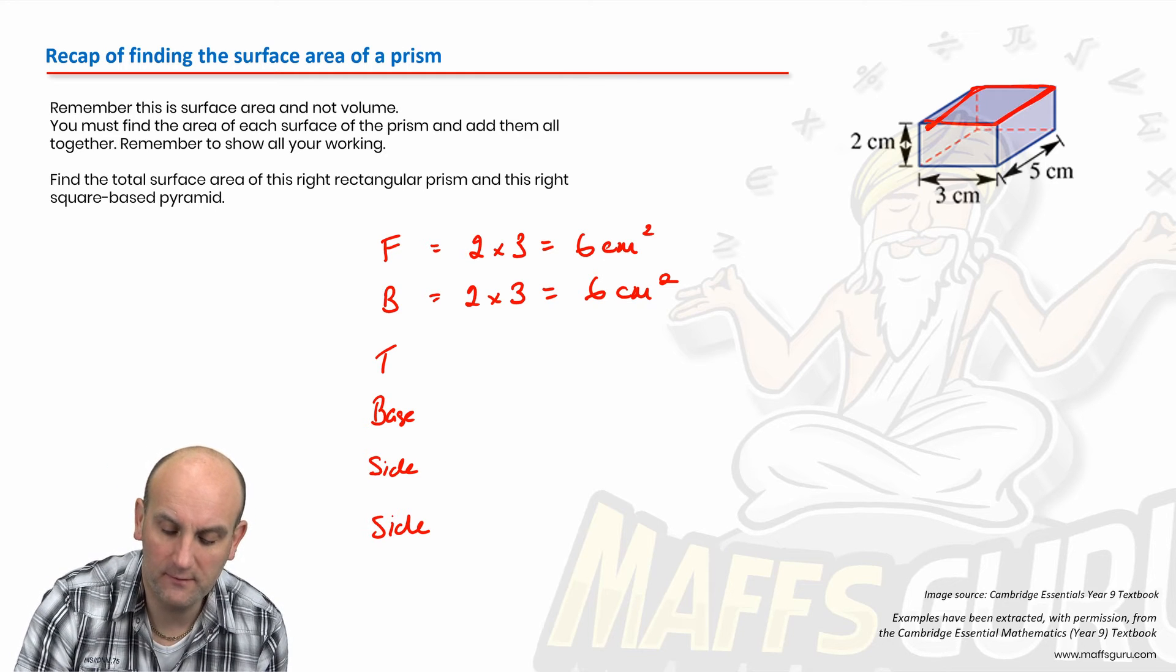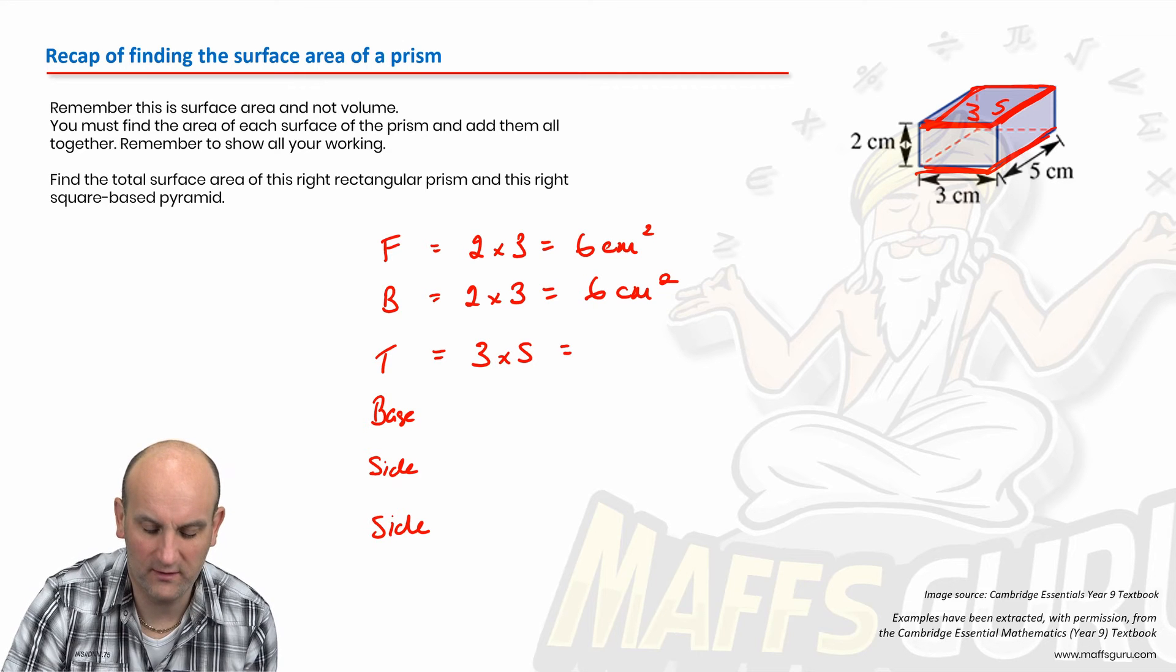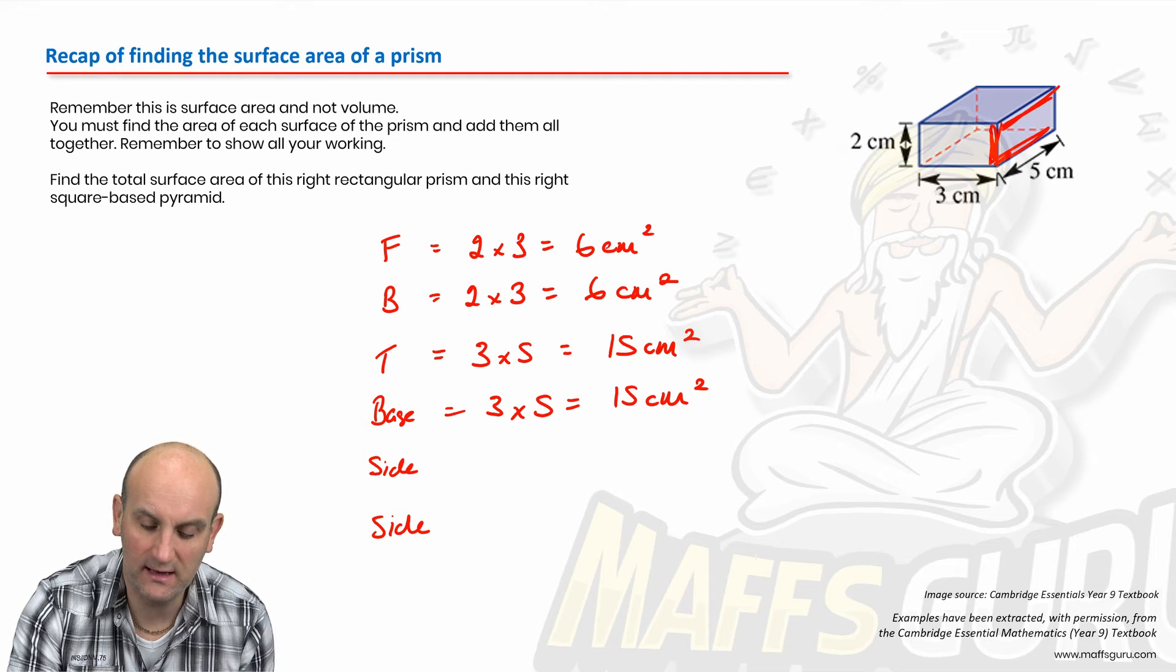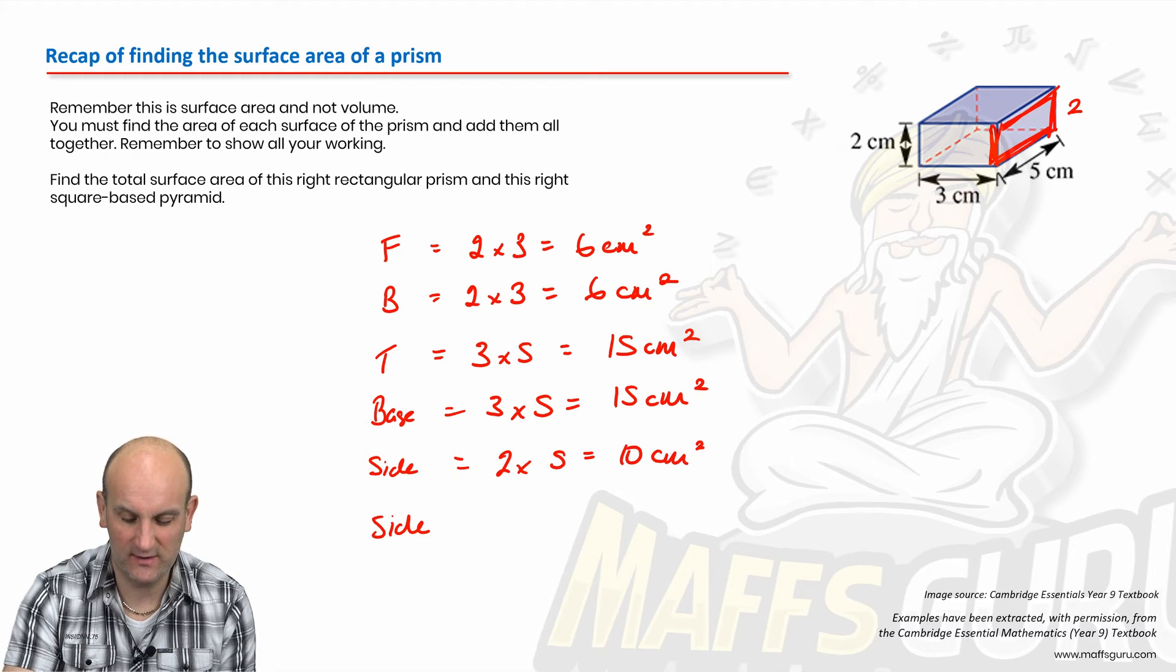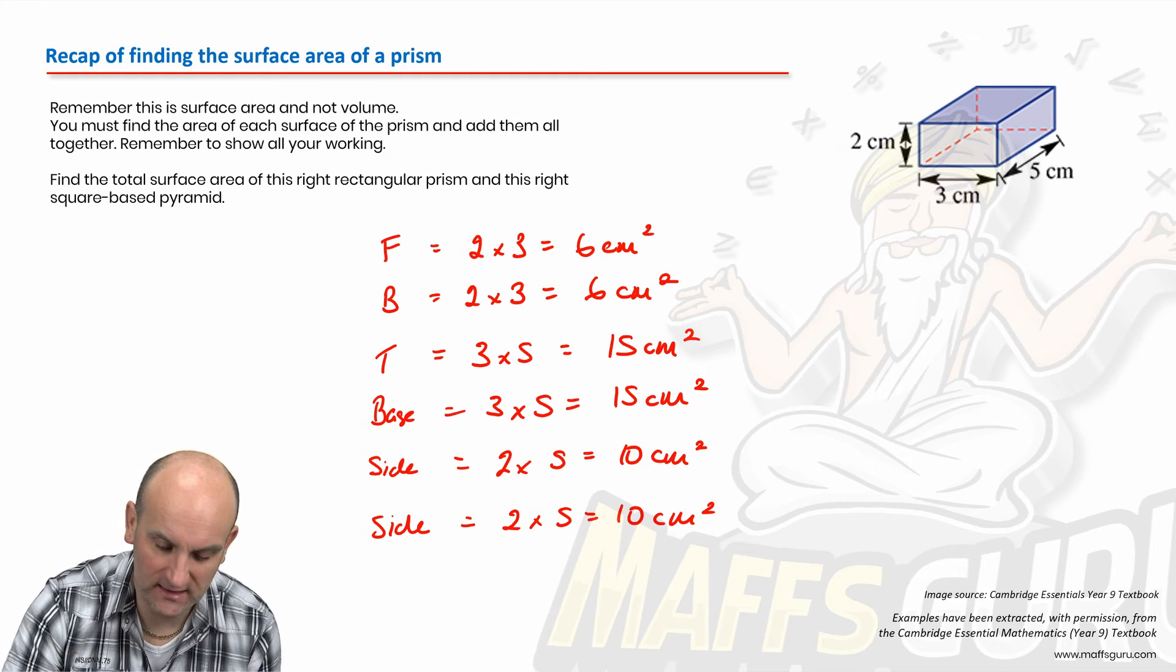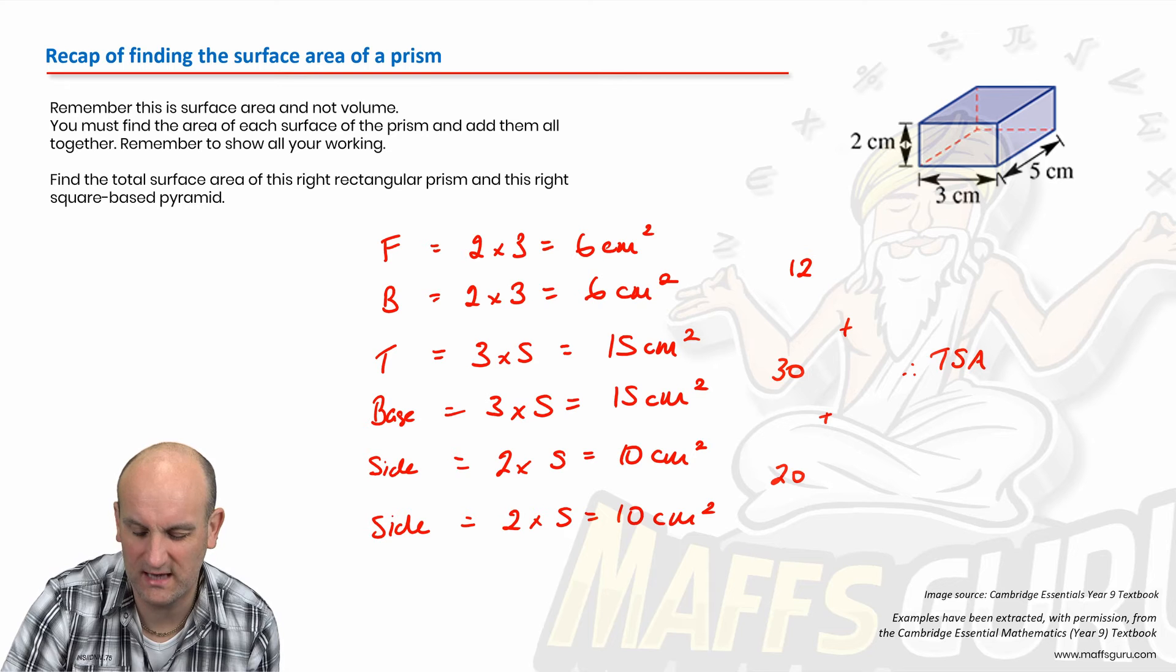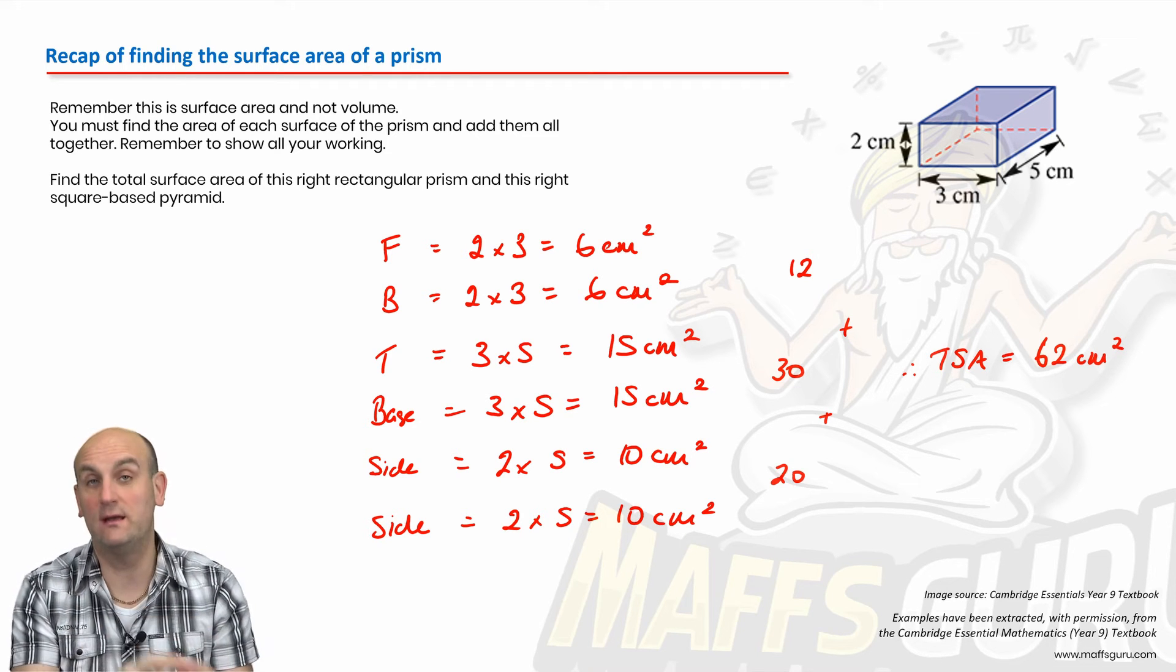What about the top? There's the top. What are the dimensions? This dimension matches this dimension, so that's three. This dimension matches that dimension, which is five. So this becomes three times five, which is 15 centimeters squared. And likewise, the base is three times five, which is 15 centimeters squared. Last thing, the side. Here is the side. What is the height? It's two. We know that the width of that is five, so that becomes two times five, which is 10 centimeters squared, and two times five, which is 10 centimeters squared. I like the methodical approach because now it doesn't matter what shape they give me. So add those two together gives me 12, add those two together gives me 30, add those two together gives me 20. Therefore, my total surface area is equal to 62 centimeters squared.